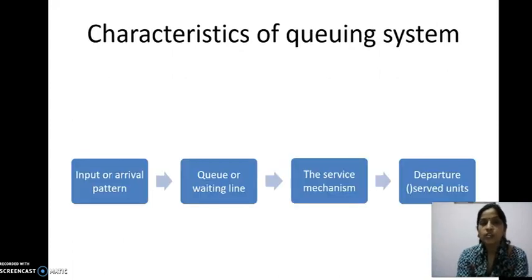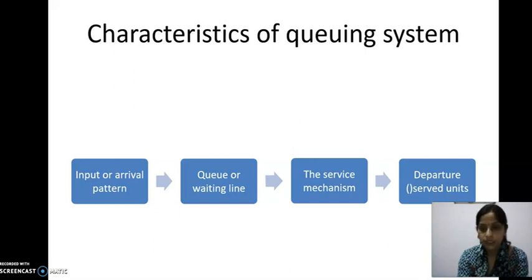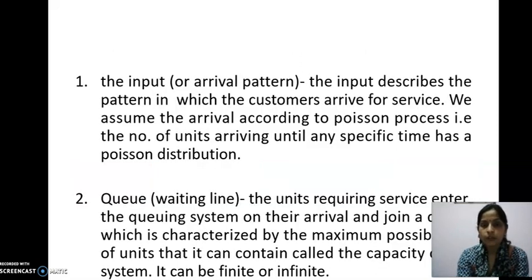Next: characteristics of the queuing system. There are basically four characteristics. First, input or arrival pattern. Second, queue or waiting line. Third, service mechanism. And the last one is departure or served units. We will study these one by one.